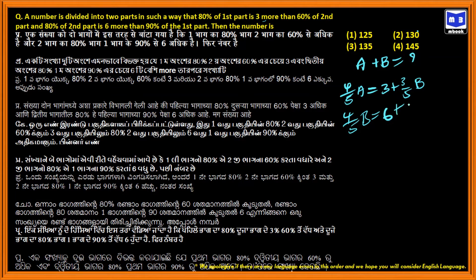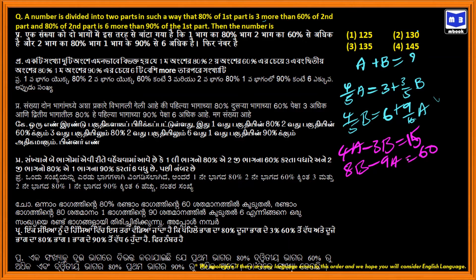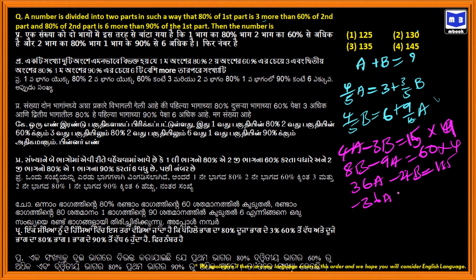And 80 percentage of the second part is six more than 90 percentage of the first part. This gives us: 4A minus 3B equals 15, and 8B minus 9A equals 30. Multiplying: 36A minus 27B equals 135, and 36A plus 32B equals 240.